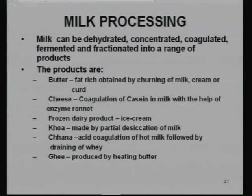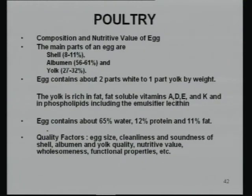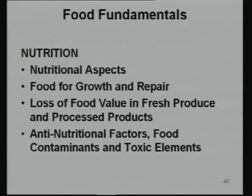Milk products include butter, cheese, frozen dairy products, khoa, chana, and ghee. For poultry, the egg composition consists of shell, albumin, and yolk — approximately two parts white to one part yolk by weight. Eggs contain fat-soluble vitamins, 12% protein, and 11% fat. Quality factors that affect egg size should also be known.